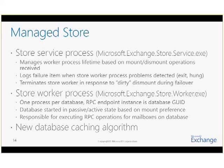In this multi-process model, there's a single controller process — Microsoft.Exchange.Store.Service.exe — and one worker process, Store.Worker.exe, for each mounted database. When a database is mounted, a new worker process is instantiated to service only that database; when dismounted, that worker process is terminated. For example, if you have 40 databases mounted, there will be 41 processes running — one for each database and one for the store service process controller. If the store controller process dies or is terminated, all worker processes will also terminate, causing an immediate failover of all active databases.